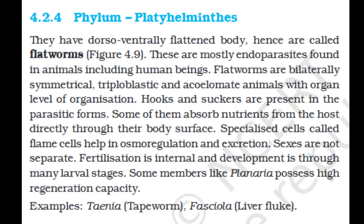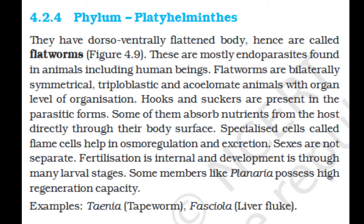Section 4.2.4: Phylum Platyhelminthes. They have a dorsoventrally flattened body, hence are called flatworms. These are mostly endoparasites found in animals including human beings. Flatworms are bilaterally symmetrical, triploblastic, and acoelomate animals with organ level of organization. Hooks and suckers are present in the parasitic forms. Some of them absorb nutrients from the host directly through their body surface. Specialized cells called flame cells help in osmoregulation and excretion. Sexes are not separate; fertilization is internal and development is through many larval stages. Some members like Planaria possess high regeneration capacity. Examples: Taenia (tapeworm), Fasciola (liver fluke).